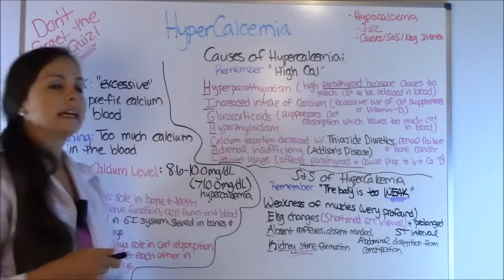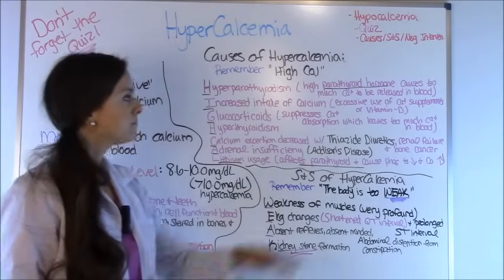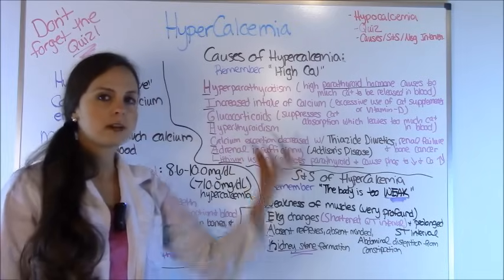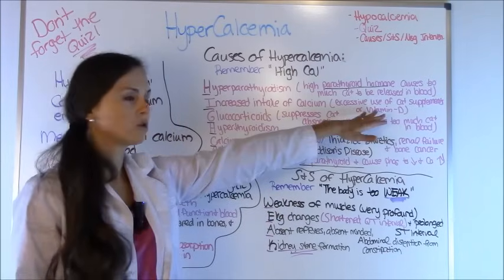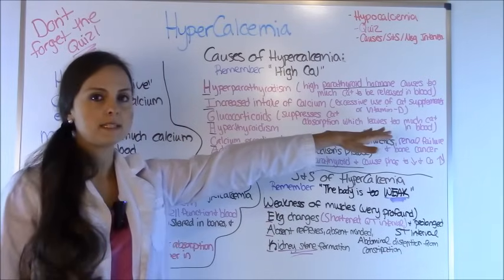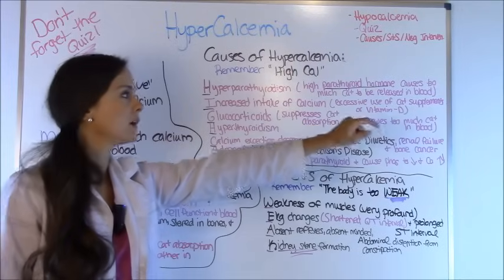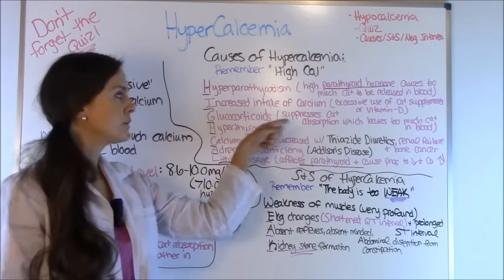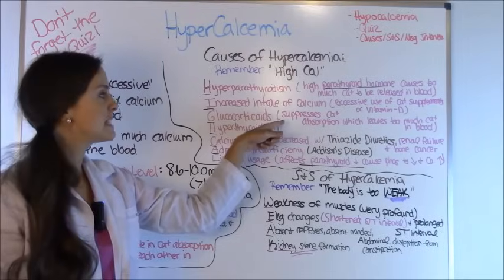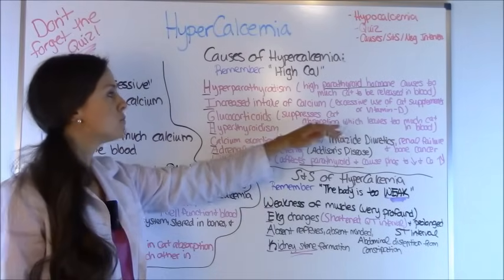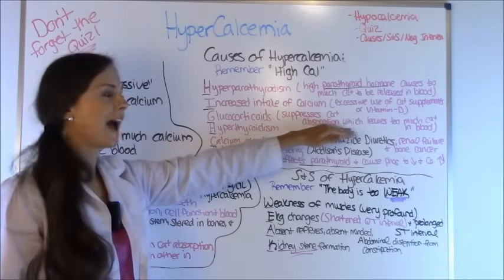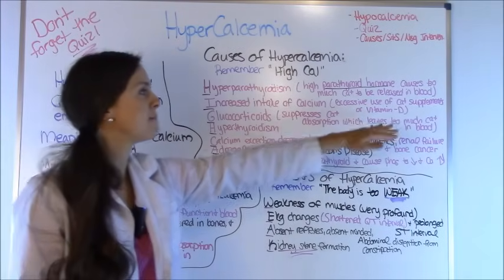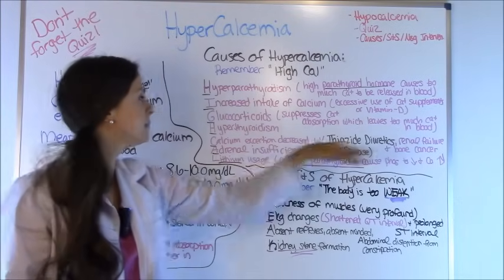I stands for increased intake of calcium. This can happen when someone takes too much of their calcium supplement or too much vitamin D — because remember, vitamin D and calcium work together. G stands for glucocorticoids, which suppress the absorption of calcium, so you're not absorbing it and too much calcium is left in the blood.